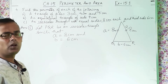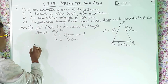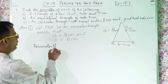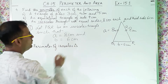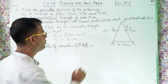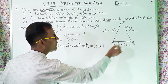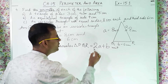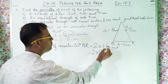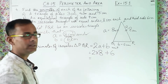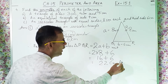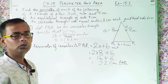Now, therefore perimeter of isosceles triangle PQR. Two sides are equal, so the formula is 2a + b. We write: 2 × a + b = 2 × 8 + 6. Two into eight is sixteen, plus six equals twenty-two. Therefore, the perimeter of the isosceles triangle is 22 centimeters.